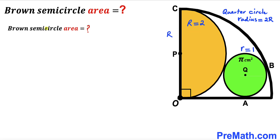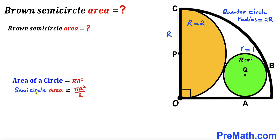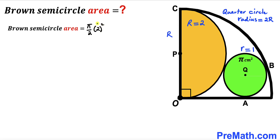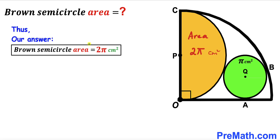For the final step, we calculate the area of the brown semicircle using the formula: Area of semicircle = πR²/2. With R = 2, this becomes π × 2² / 2 = π × 4 / 2 = 2π cm². Therefore the area of the brown semicircle is 2π centimeters squared. Thanks for watching — please don't forget to subscribe for more exciting videos!